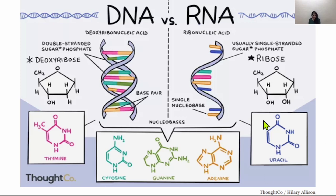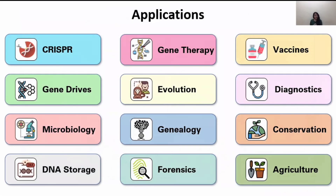Even the novel SARS-CoV-2 virus, which is currently driving us crazy, is a single-stranded RNA virus. Furthermore, not all DNA is double-stranded and not all RNA is single-stranded — there are always exceptions to the rule. There can be triple-stranded DNA or double-stranded RNA.